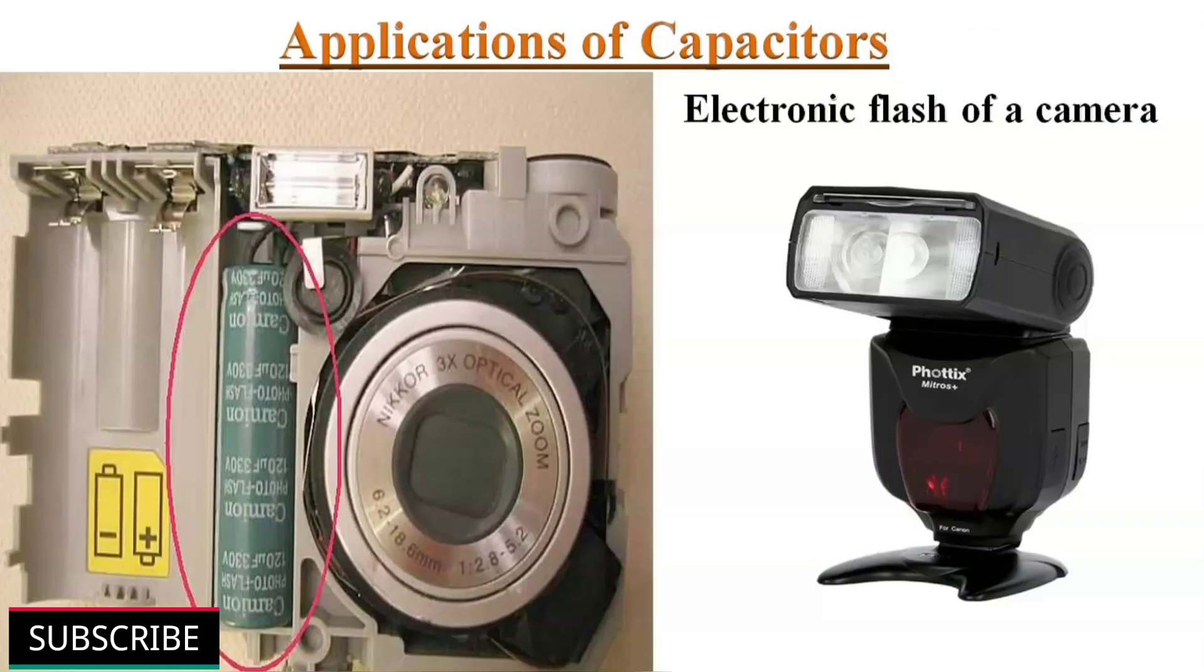The difference between a capacitor and a battery is that a capacitor can dump its entire charge in a tiny fraction of a second, where a battery takes some time to discharge. That's why electric flash on a camera uses a capacitor. It dumps its full charge into the flash tube almost instantly.